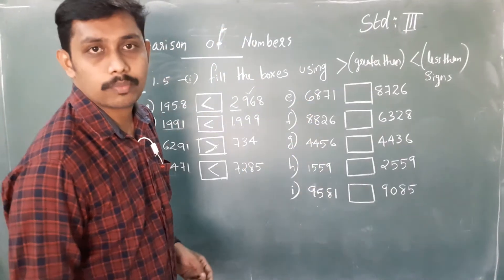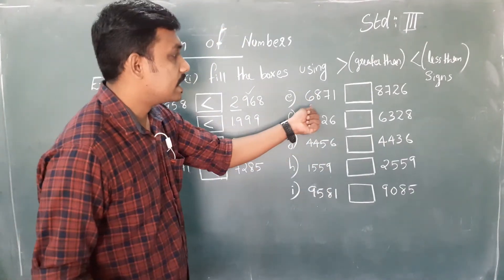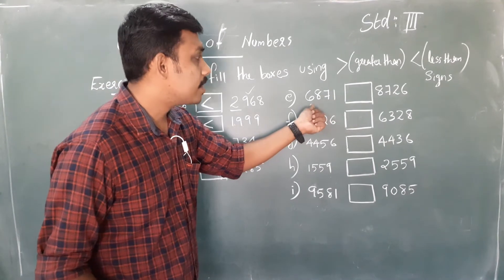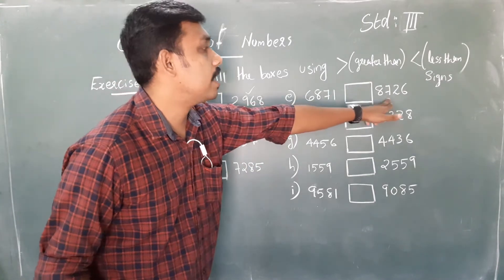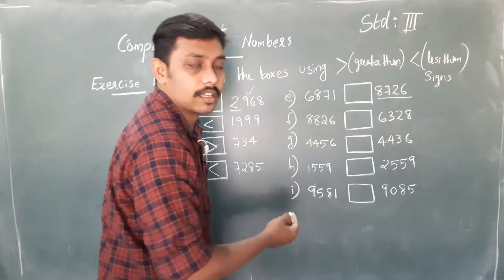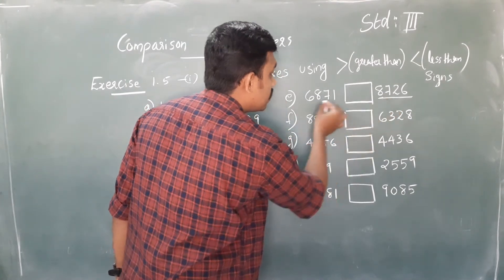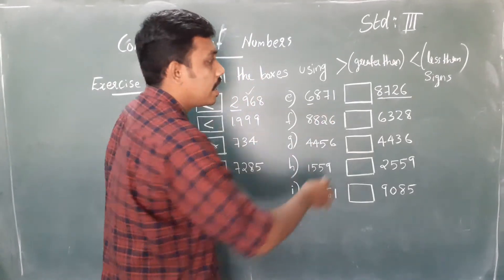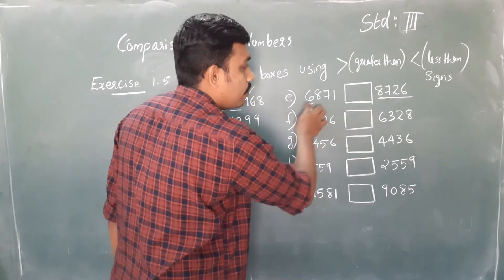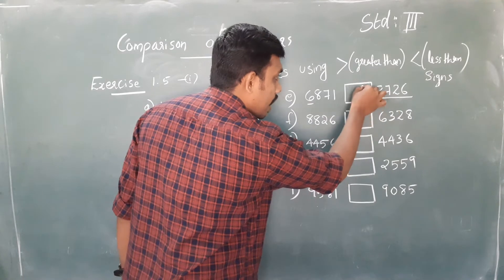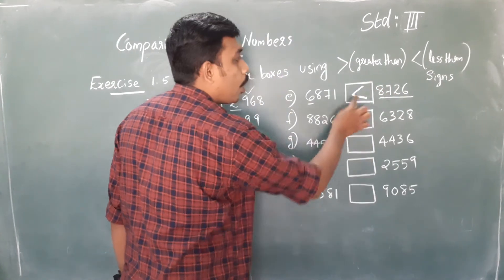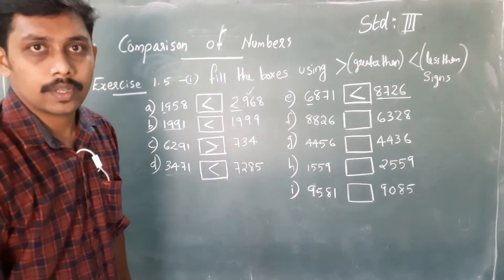Look at the fifth problem: 6871. Here 8 is the left extreme digit of the second number and 6 is the left extreme digit of the first. So the second number is larger. We represent it with the open mouth to the larger number.